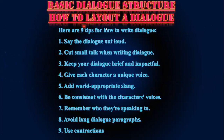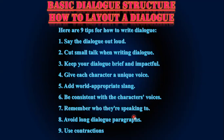Basic dialogue structure — how to lay out a dialogue. Here are nine tips for how to write dialogue. Number one: say the dialogue out loud. Number two: cut small talk when writing dialogue. Number three: keep your dialogue brief and impactful. Number four: give each character a unique voice. Number five: add word-appropriate slang. Number six: be consistent with the character's voices. Number seven: remember who they are speaking to. Number eight: avoid long dialogue paragraphs. Number nine: use contractions.